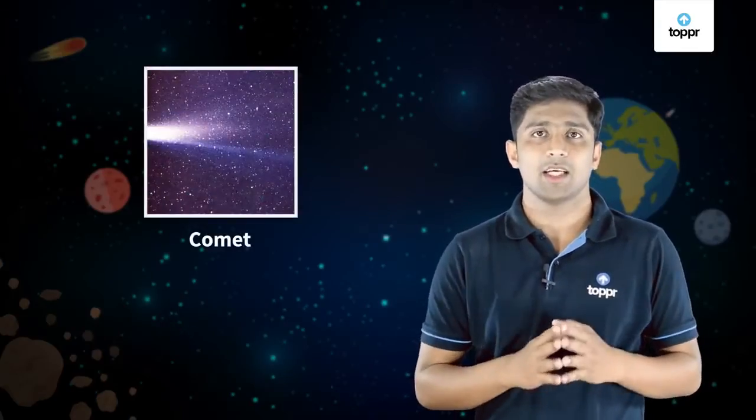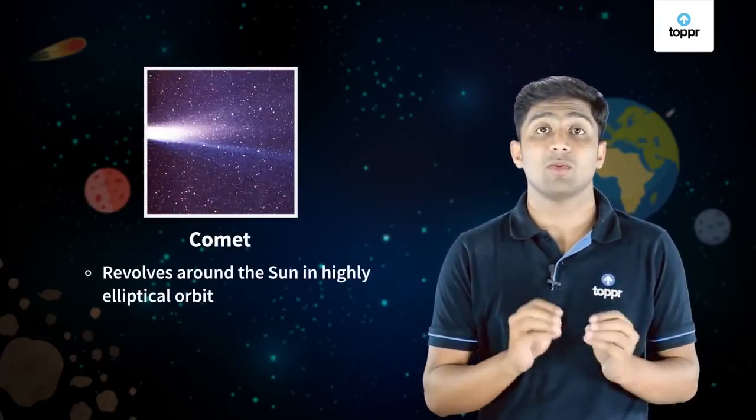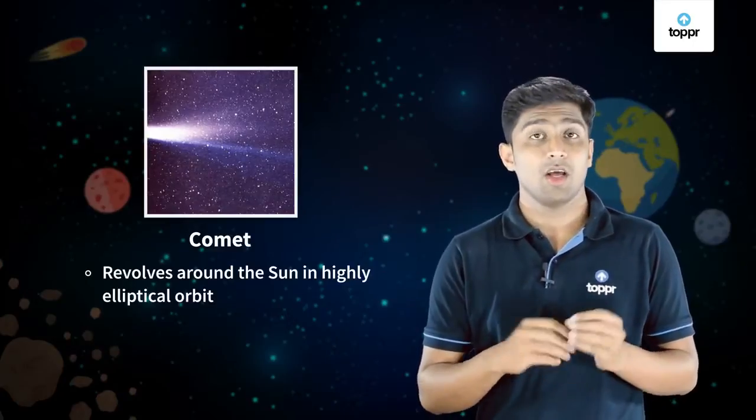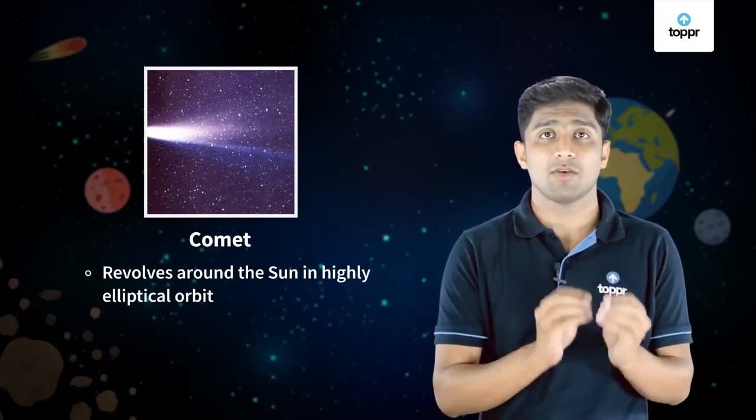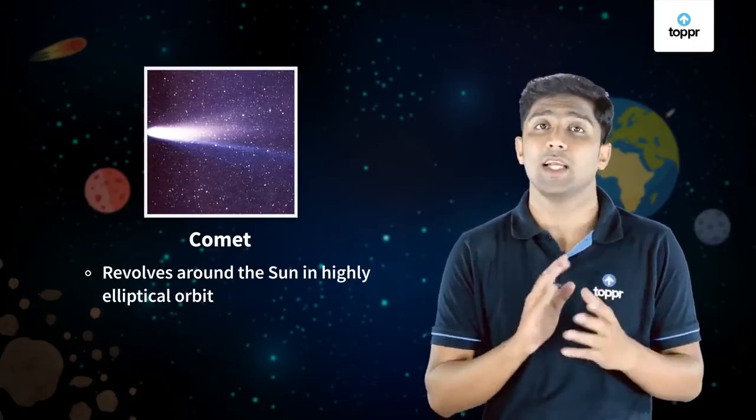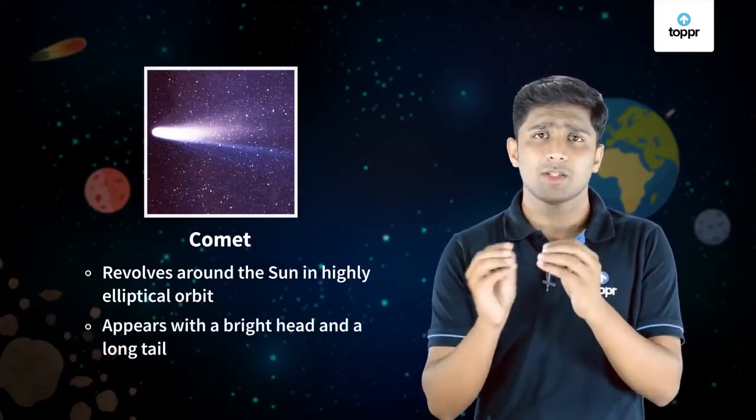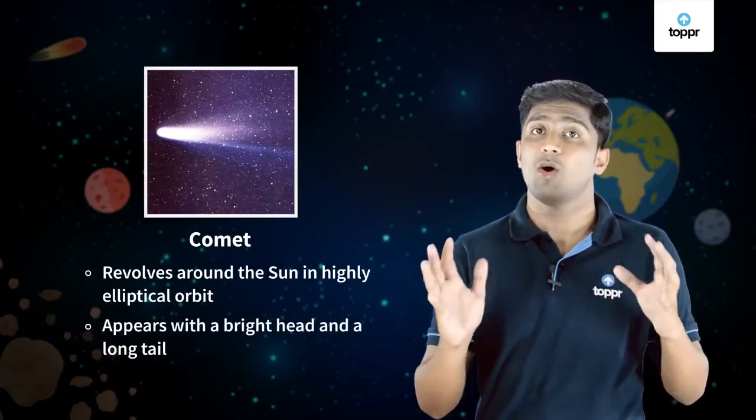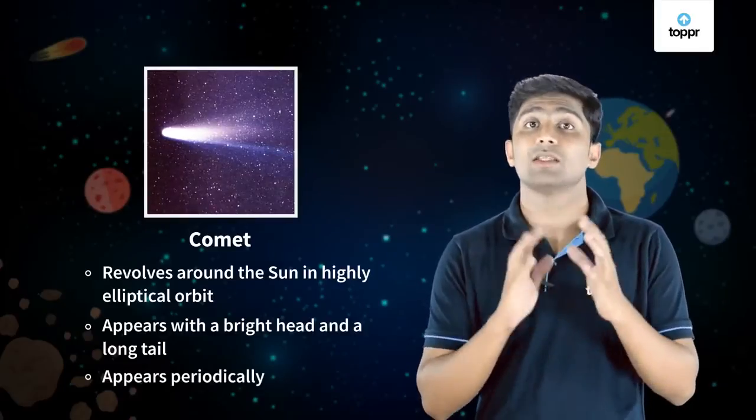Now let's see about comets. A comet revolves around the sun with a highly elliptical orbit. Usually the period of revolution of a comet around the sun is very long. A comet appears with a bright head and a long tail. It appears periodically.